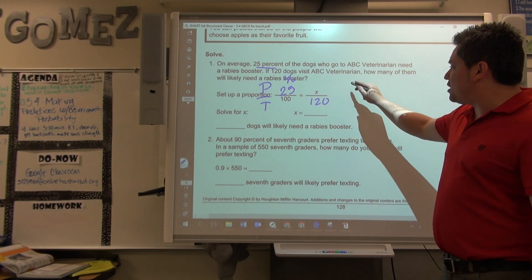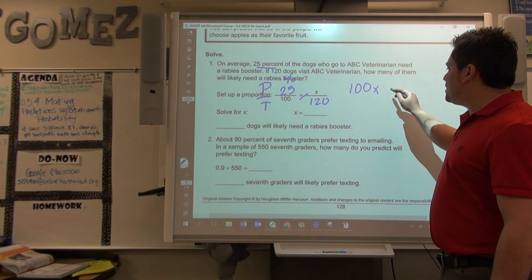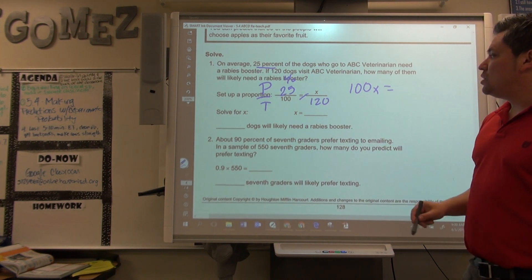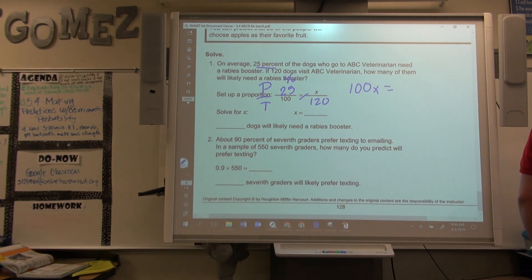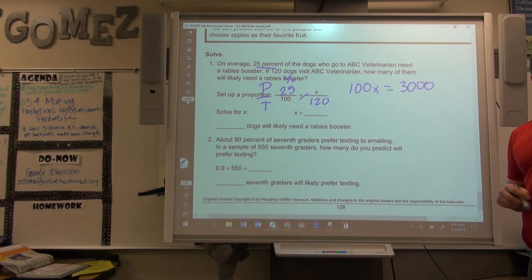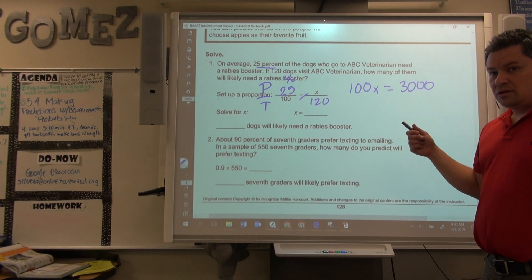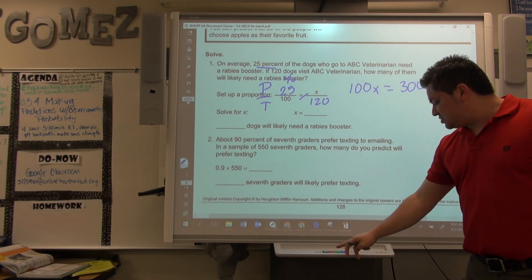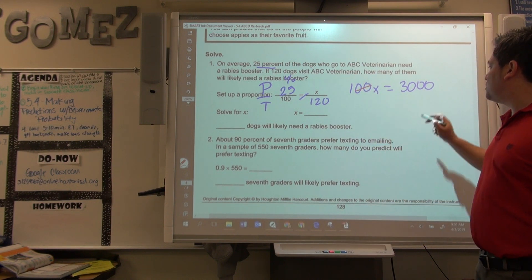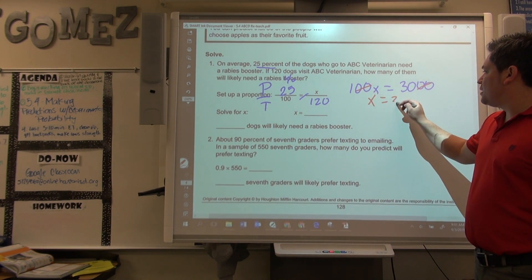Then, you do the cross products after you set up your equation. A hundred times X is just a hundred X equals to 120 times 25, which is 3,000. In this case, you can either divide by a hundred, or just take away the last two zeros, because I already showed you how to do that.